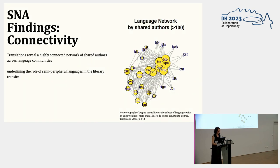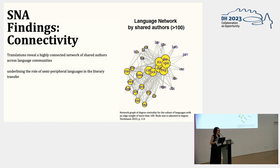Let's talk about some of my findings. I ran several centrality measures, including eigenvector and betweenness. Here I'm showing the most concentrated authors — those with more than 100 languages. By looking at languages by shared authors, I tested Heilbronn's centrality argument. I found firstly that the network is highly connected but with increased concentration — the more translated authors a language has, the more clearly certain languages appear as a center and others as more peripheral. But we can also see the importance of semi-peripheral languages to the left side of the graph — Norwegian, Portuguese, Turkish, and so on — revealing a poly-centrical structure.